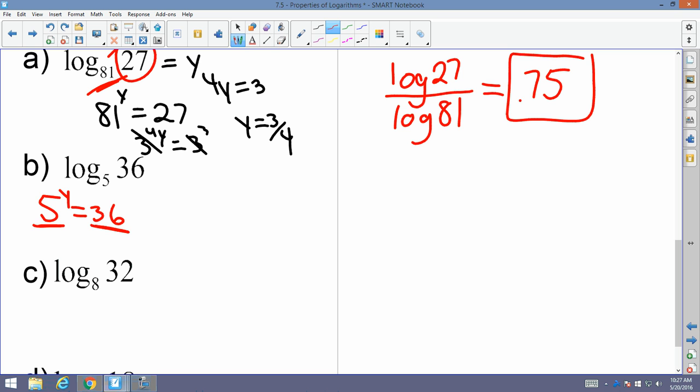If you go 5 to the y equals 36, there's no way I can break 5 up and 36 to have common bases. It just doesn't happen. So all you've got to do in this particular case is use the change of base formula. So you're going to go log of 36 divided by log of 5, which will equal 2.226. Very good.